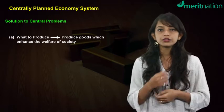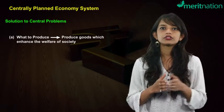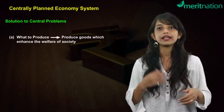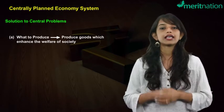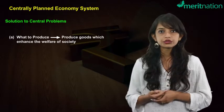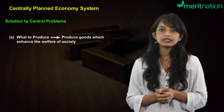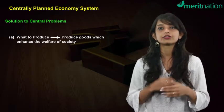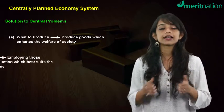The problem of what to produce is solved by producing those goods and services which enhance the welfare of society. For example, food grains and infrastructure are given more importance as they help in developing society as a whole.